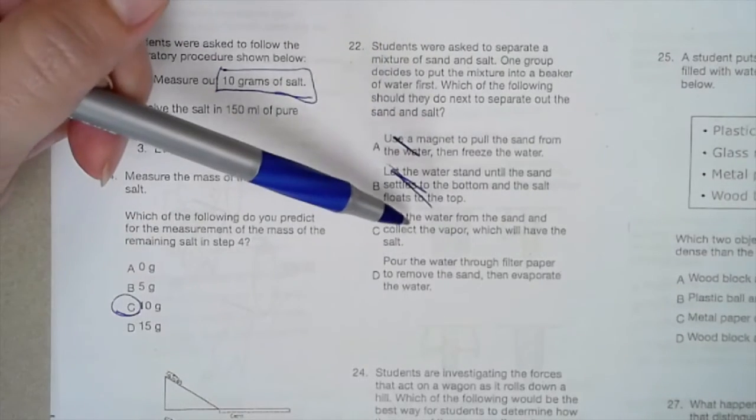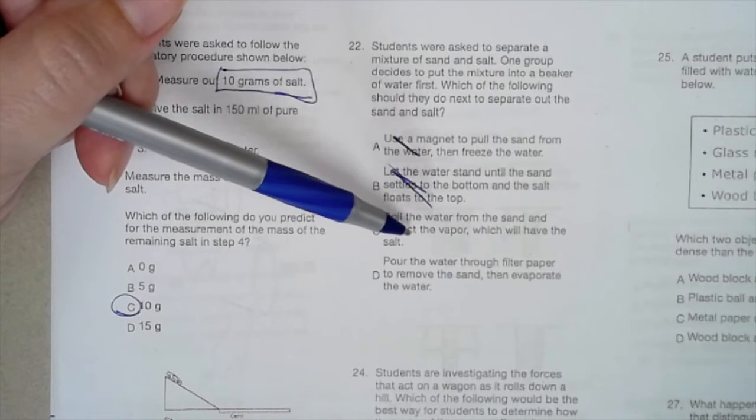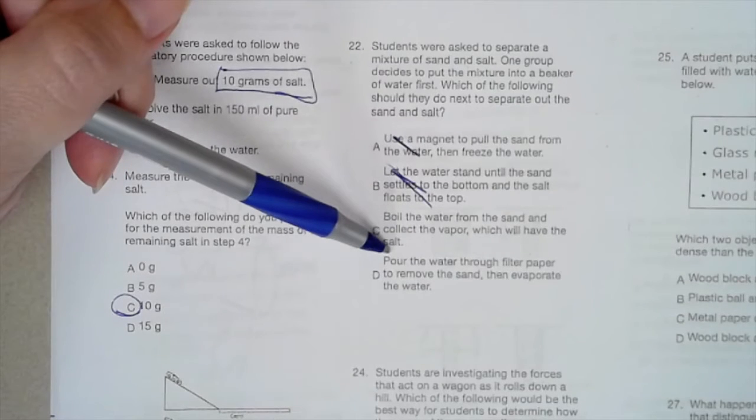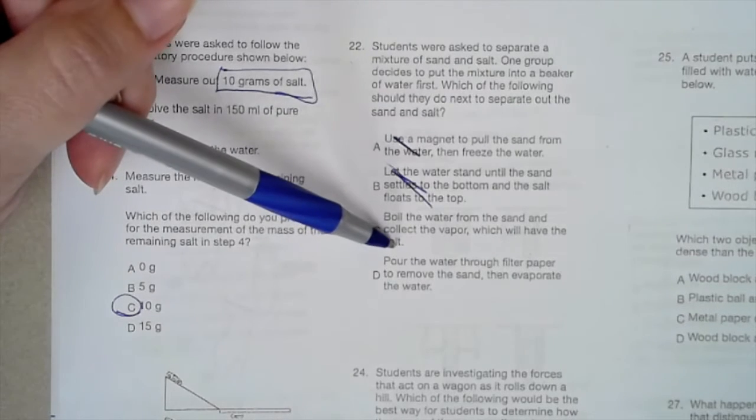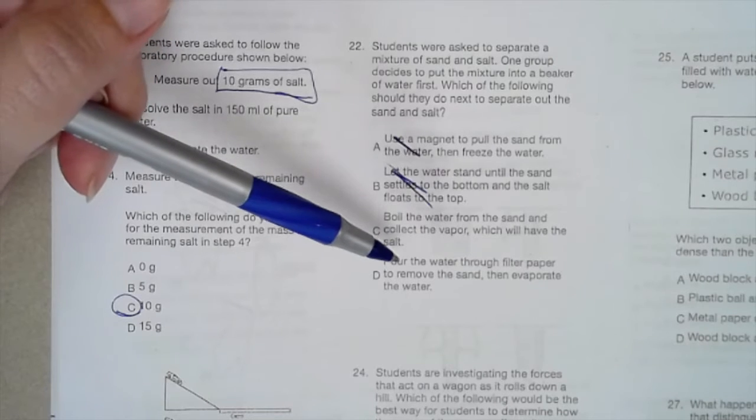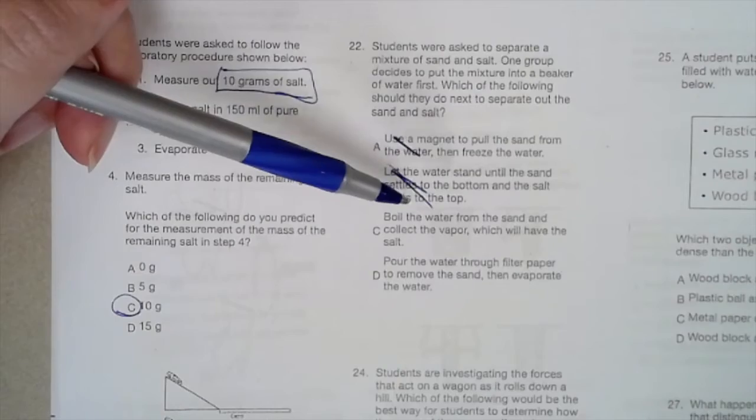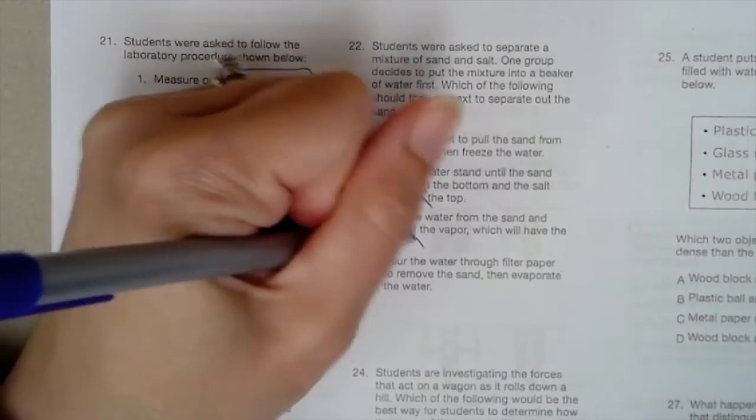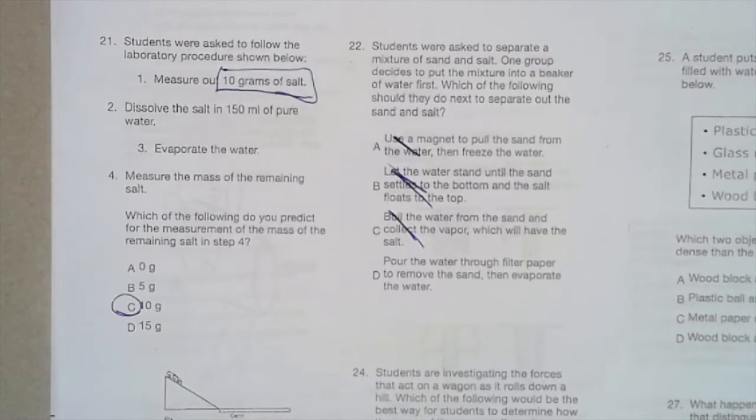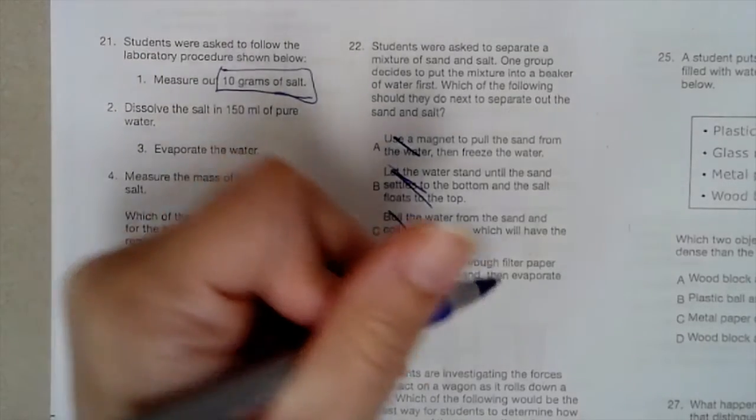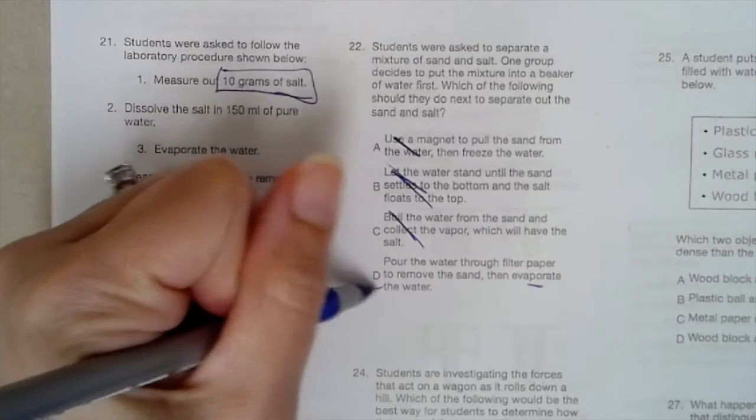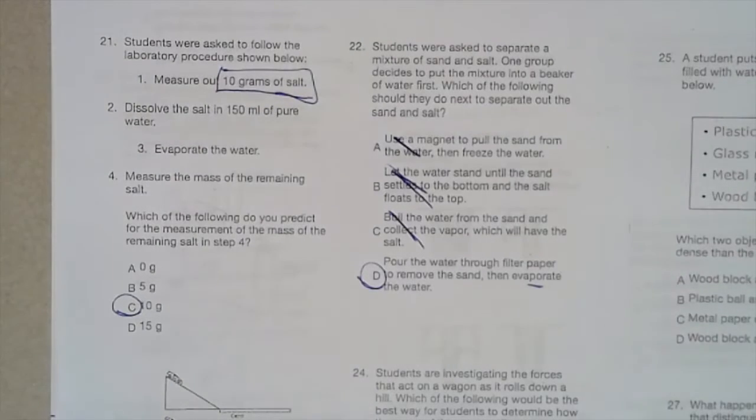Boil the water from the sand and collect the vapor, which will have the salt in it. If we boil the water, is the water vapor going to have the salt in it and can you collect the water vapor? Not very easily. Not going to work. Pour the water through a filter paper to remove the sand. Yes. Then evaporate the water and you'll have the salt left. So letter D was our correct answer.